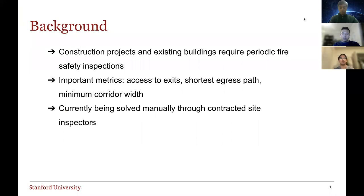A brief background of why this problem is important is that construction projects and existing buildings require periodic safety inspections throughout the lifetime of a project. This problem is currently being solved manually through contracted site inspectors, and the things that these site inspectors check are access to exits, short egress paths, and minimum corridor widths, which we'll be checking.